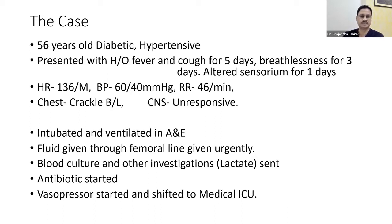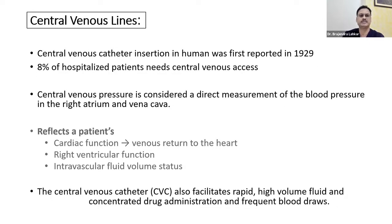Lactate was checked, antibiotics and vasopressors were started, and the patient was shifted to medical ICU. This is a situation we all deal with almost every day. Central venous catheter insertion in human beings was first reported in 1929, and 8% of hospitalized patients need central venous access. Over the last almost 100 years, development in catheter types and care has been tremendous. Central venous pressure is considered a direct measurement of pressure in the right atrium and vena cava.